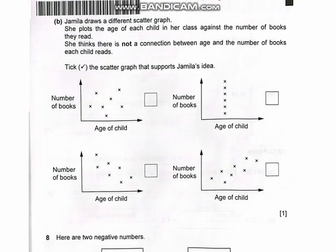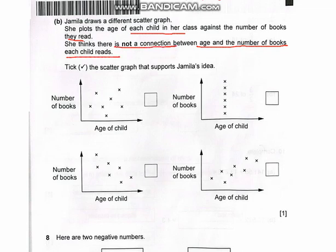Now the B part: Jamila draws a different scattered graph. She plots the age of each child in her class against the number of books they read. She thinks there is not a connection between the age and the number of books each child reads. So we have to find a graph which is not showing the connection between the age and the number of books read by the children. Let's look at the first one — number of books and the age of the child. You will see that this is random data; there is no link between the age of the child and the number of books.